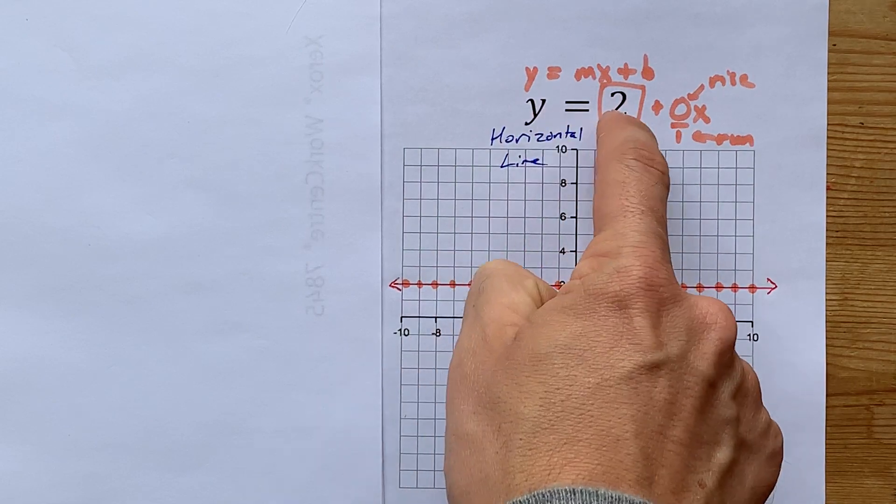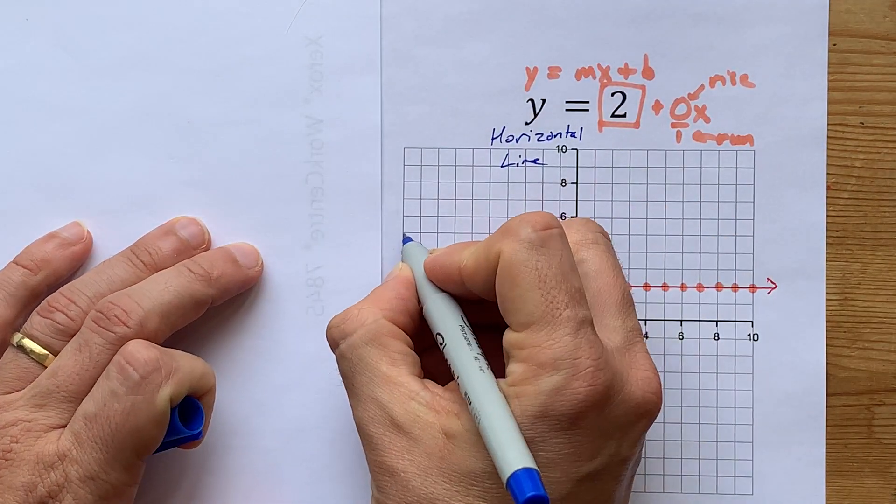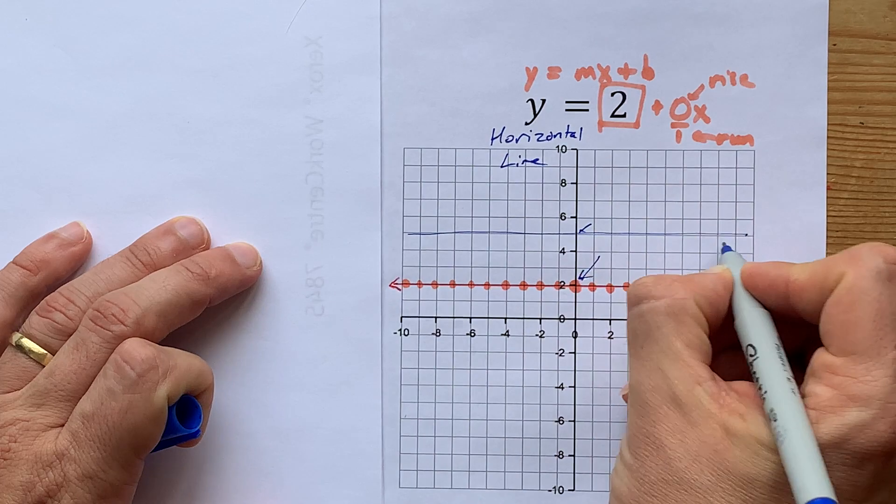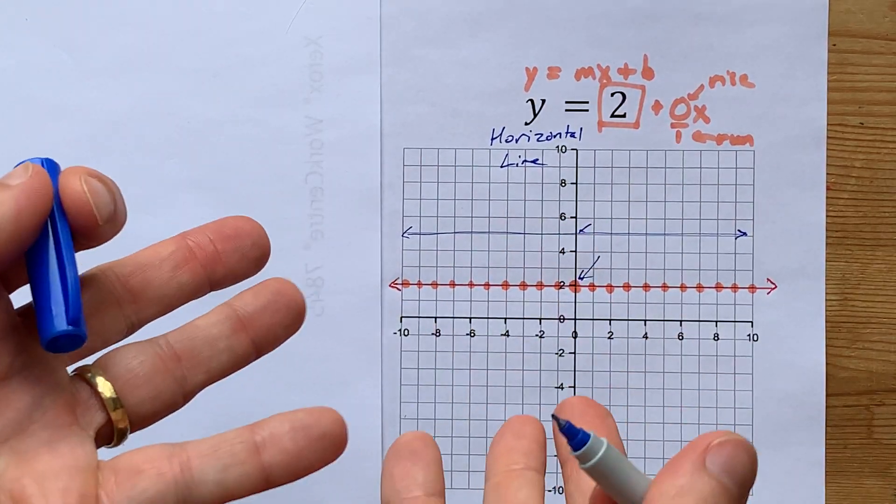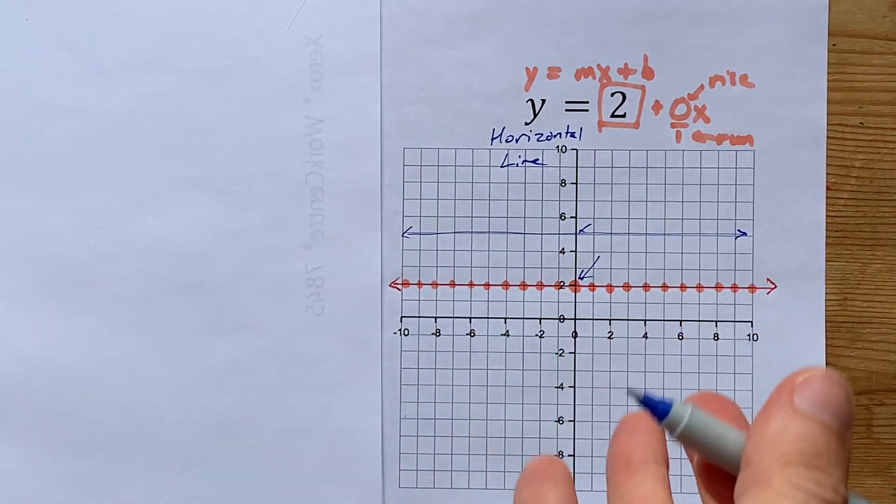y equals 5, as an example, I guarantee you is just a horizontal line that happens to go through 5. That wasn't asked here, but that's just the way it is.